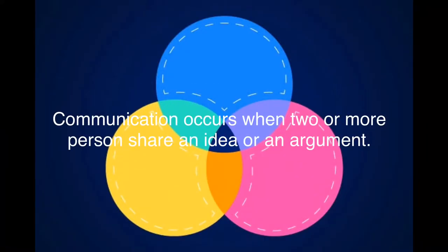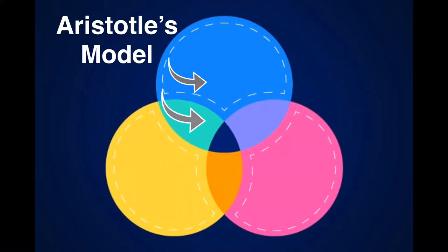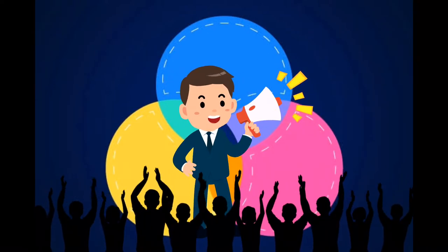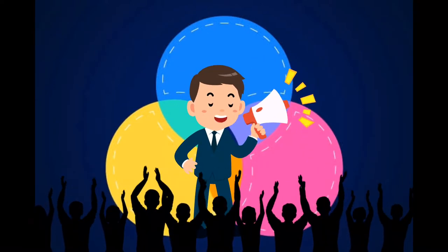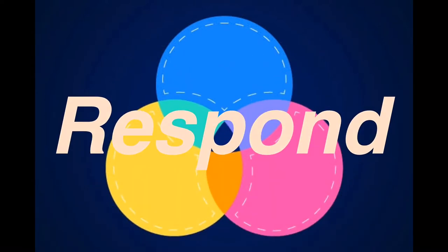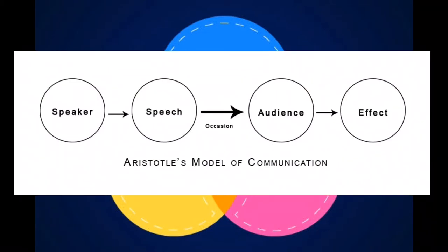Communication occurs when two or more persons share an idea or an argument. Aristotle's model is the first model ever introduced in our history. It is widely used in seminars, presentations, campaigns and many more. It is also called a linear model and is used more for influencing people — like in campaigns, you want them to vote for you. Linear model shows how Aristotle explained his perspective about communication.